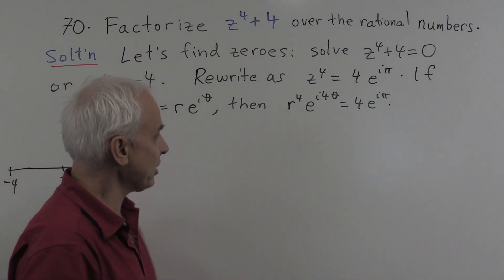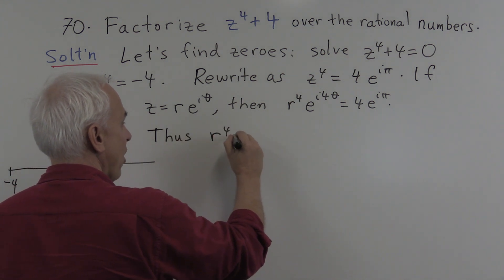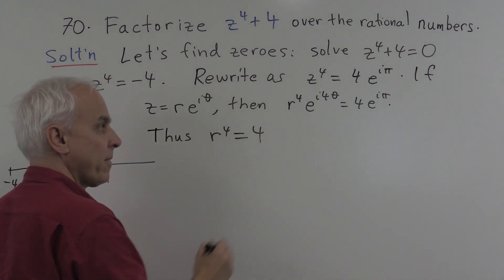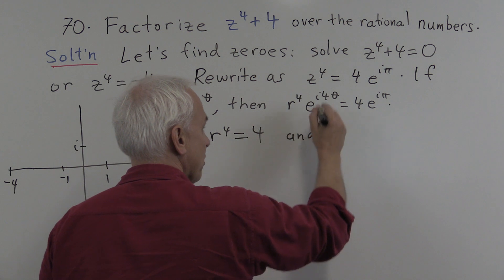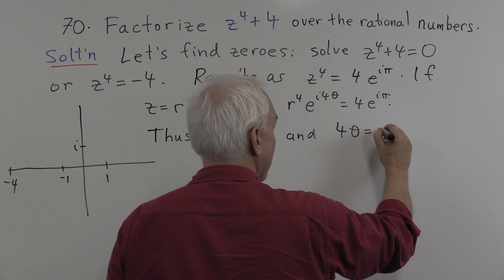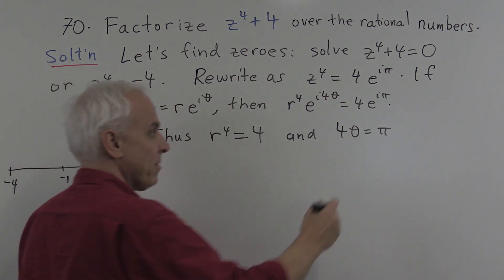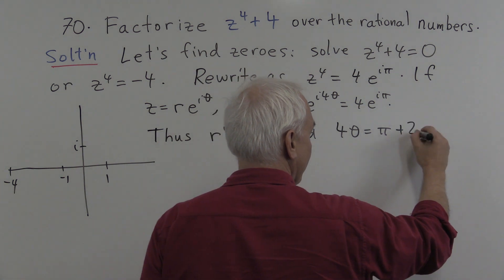So comparing the moduli, we see that r to the fourth has to equal 4. And comparing the arguments, we see that 4 theta has to equal pi. Well, up to a multiple of 2 pi, so we could write plus 2 pi k.